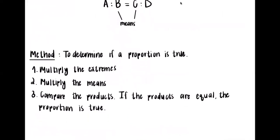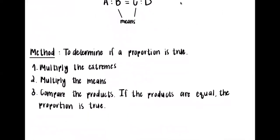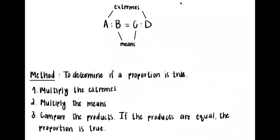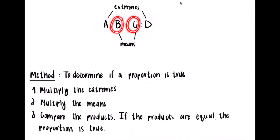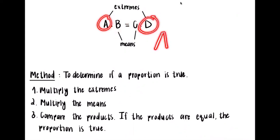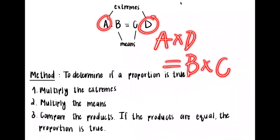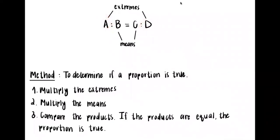To determine if a proportion is true, we multiply the extremes — the outside numbers — and then we multiply the means — the inside numbers. What we're verifying is whether those two products are the same. So the product of the extremes, A times D, should equal the product of the means, B times C. If it's the same number, then the proportion is true. If they're not the same number, then the proportion is false.